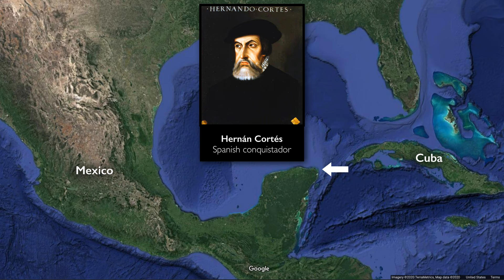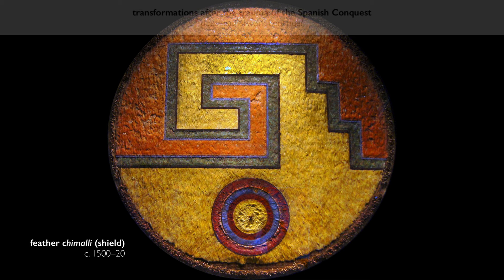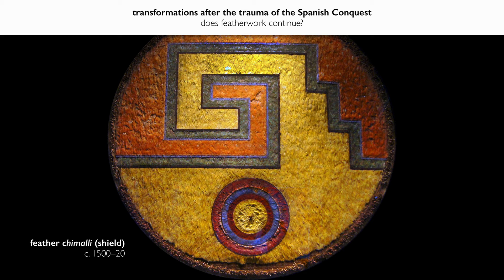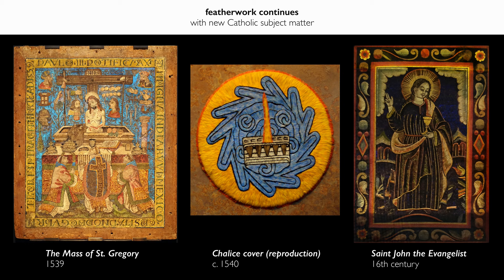Spanish conquistador Hernán Cortés goes to Mexico and conquers the Aztecs and other peoples in Mexico, and they saw this indigenous art form of featherwork. With these transformations, some things cease to exist or they're eradicated, but then other things continue and some things are modified. Featherworking continues after the Spanish conquest, but the subject matter is what transforms — instead of pre-conquest subject matter, we now have it in the service often of Catholic artwork.